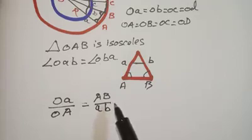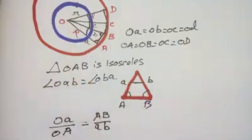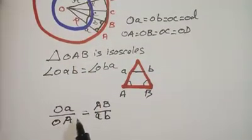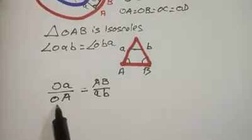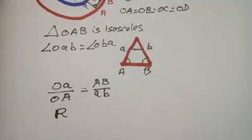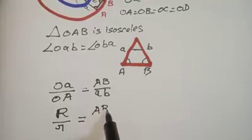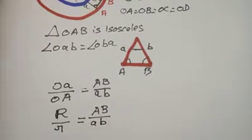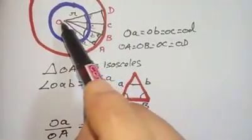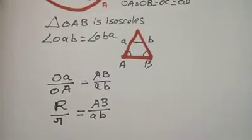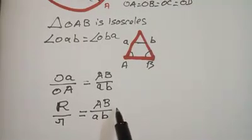So I can put it as OA/OA = AB/AB. Now note that the bigger radius is R and the smaller radius is r. Because OA corresponds to the big R and OA corresponds to the small r, we can write this as R/r = AB/ab. So we get the first relation: the ratio of the bigger radius to the smaller radius equals the ratio of their corresponding polygon sides.